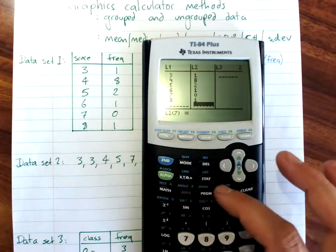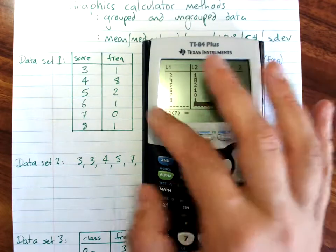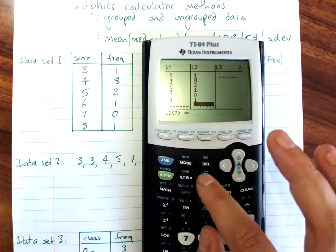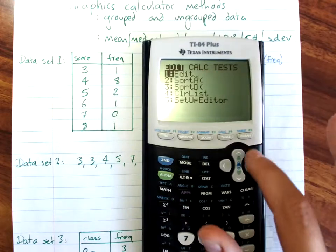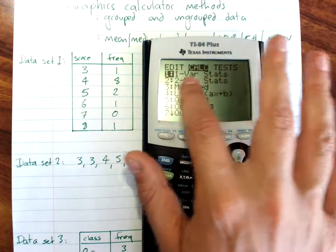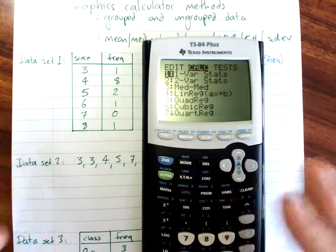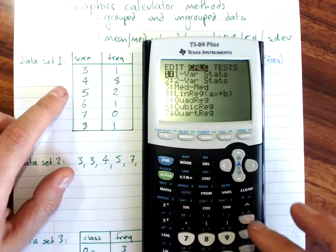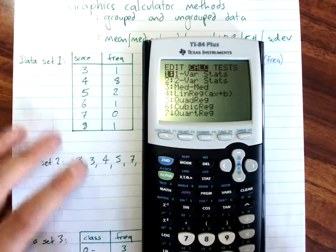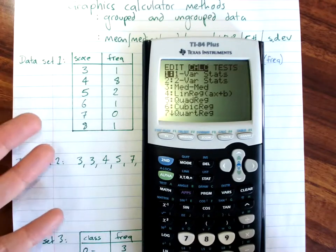Then to work with that, to get your information that you want, stat, move across to calc, and we're always going for one variable stats. That's basically saying we're just measuring one thing. So no matter what we're doing here, we're in one variable data at the moment.